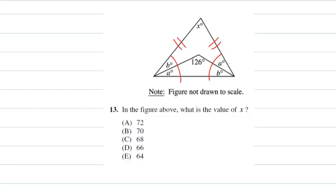Now, in the bottom triangle, I can say 126 plus A plus B equals 180. When I take away 126 from both sides, that means that A plus B equals 54.